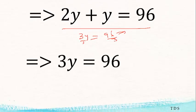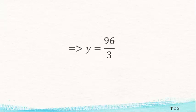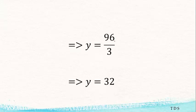So 3y equals 96. The next step is to divide both sides by the coefficient of y, which is 3. Dividing both sides by 3 gives us y equals 32.